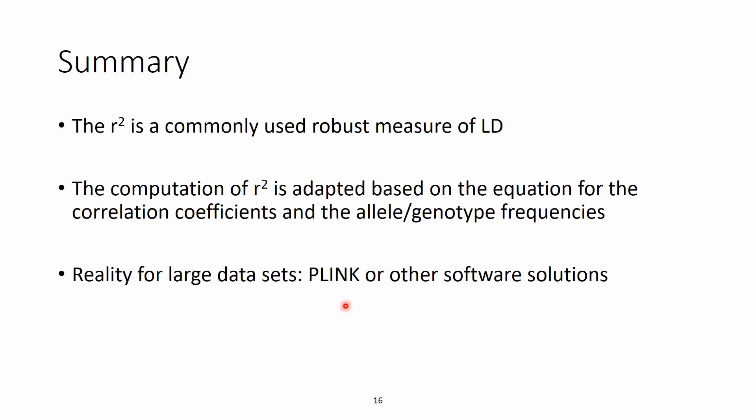So for the summary, the R square is a commonly used and robust measure of LD, and the computation of the R square is adapted based on the equation for the correlation coefficient and for the allele and genotype frequencies. In reality, of course, we talk about computation of linkage disequilibria between a large number of markers or marker pairs, so we use software for it, for example, Plink or other software. And also in the follow-up videos, we will actually show how it is done using Plink itself. For today, I thank you for your time, thank you for your interest also in this advanced content, and I wish you a very nice continuation of the day.